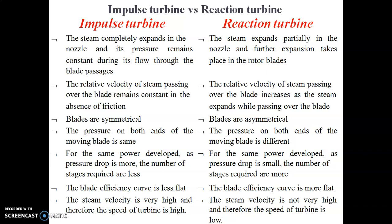Second point: in an impulse turbine, the relative velocity of steam passing over the blade remains constant in the absence of friction. In a reaction turbine, the relative velocity of steam passing over the blade is increased as the steam expands while passing over the blade.